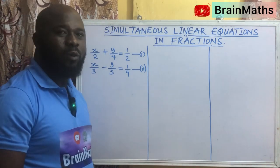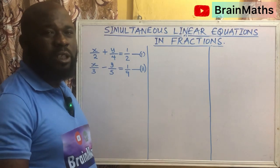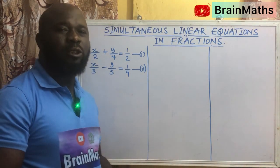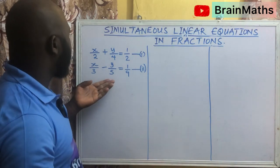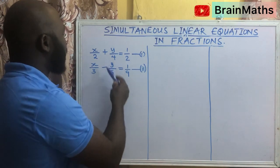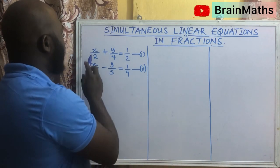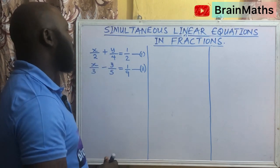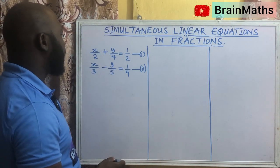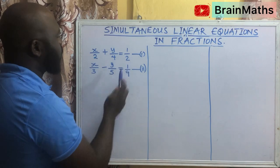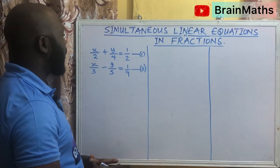In our previous lesson, we have seen how to solve simultaneous equations using both elimination method and substitution methods. In this case, we want to see how to simplify this equation and then obtain the value for x and y. So the first thing we are going to do in approaching this kind of question is to find a way to bring this equation into a linear equation.